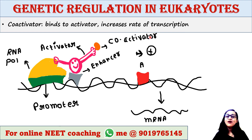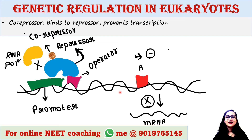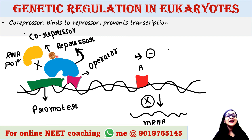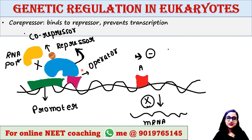In eukaryotes, co-repressors are sometimes found along with the repressor. A co-repressor does not directly bind to DNA; instead it indirectly regulates gene expression by binding to the repressor, basically enhancing the function of the repressor.